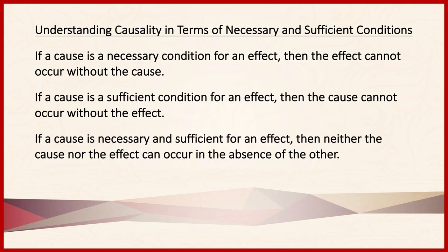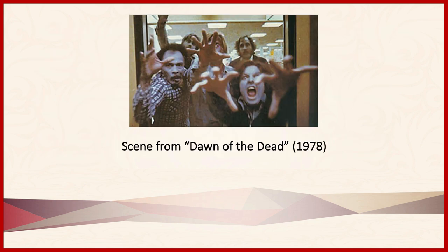In certain other cases, causes can be both necessary and sufficient for an effect. If this is the case, then neither the cause nor the effect can occur in the absence of the other. For example, the only way to kill a zombie is to destroy its brain, so destroying its brain is necessary for killing it. Furthermore, if you do destroy its brain, then it will die, so destroying its brain is also sufficient. When we're testing for causal relationships, then, we're testing to see whether causes are necessary, sufficient, or necessary and sufficient to bring about an effect.